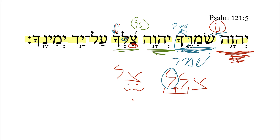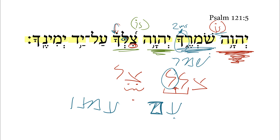We see this with some prepositions like eem as well, that becomes something like eemanu, with that dagesh forte right there. So just an interesting morphological feature there.